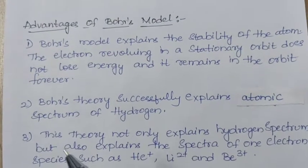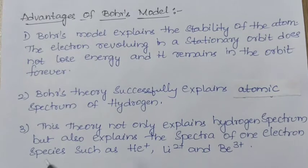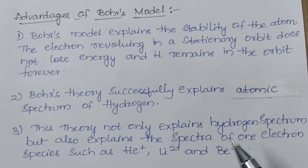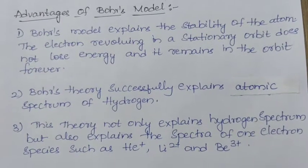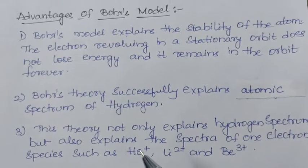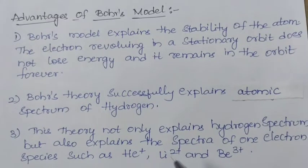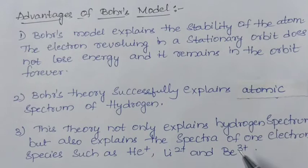Bohr's theory successfully explains the atomic spectrum of hydrogen. This theory not only explains hydrogen spectrum but also explains the spectra of one electron species such as helium ion, lithium ion and beryllium ion.